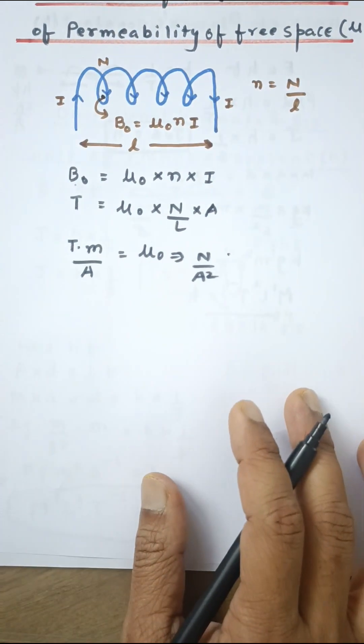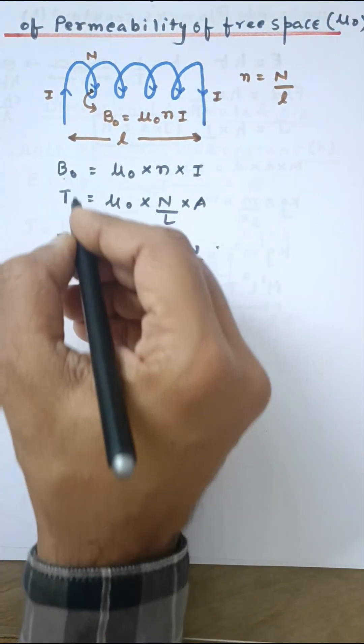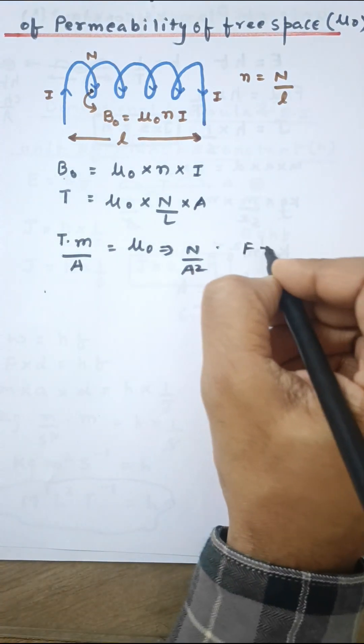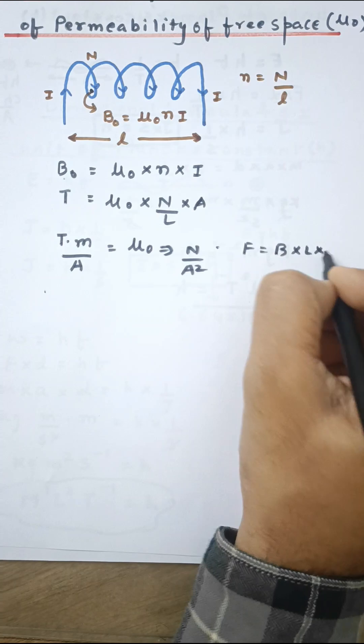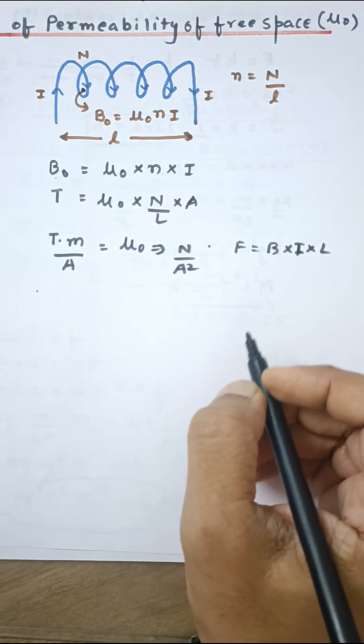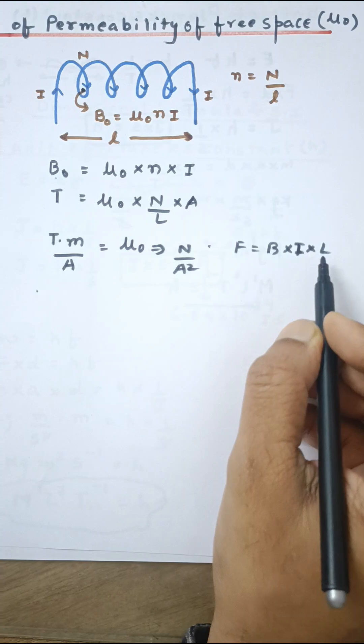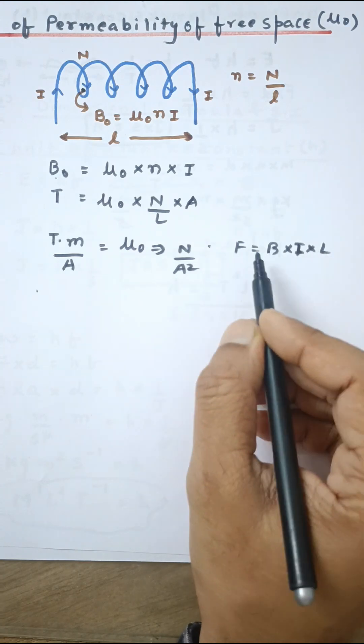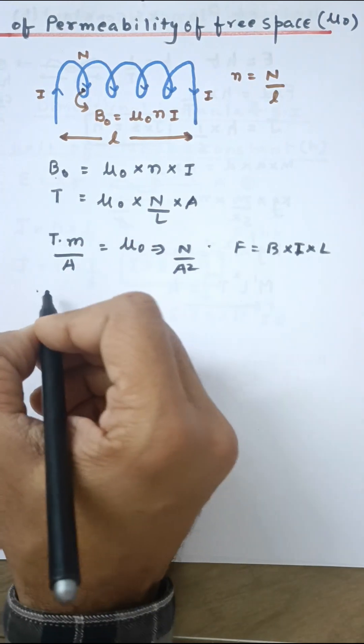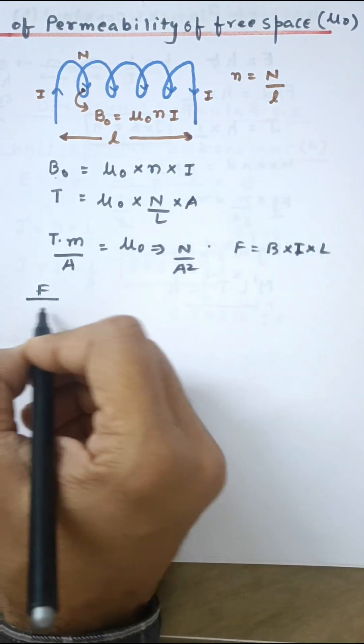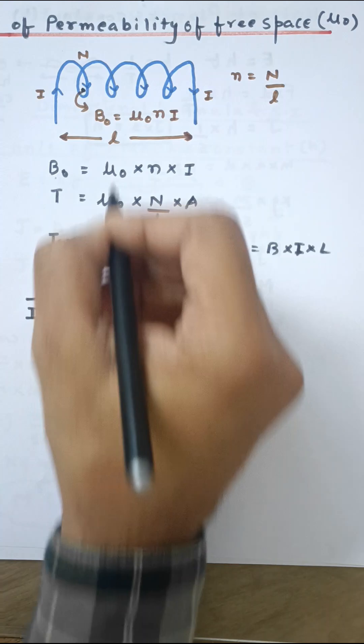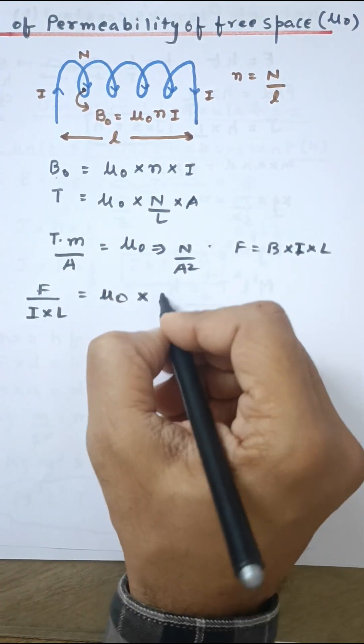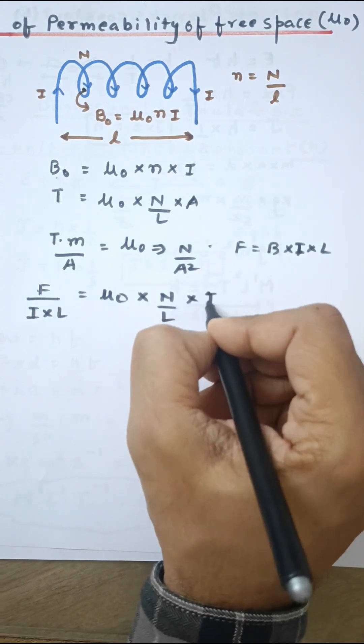Now let us write down the dimensional formula of μ0. I am going to write F equals B times I times L sin theta. We know this formula: when a current carrying wire is placed in a magnetic field, the length is L, current is I, in a magnetic field B, it experiences a force F. So I am simply going to use B as F upon I times L. That is equal to μ0. So instead of this B0, I have written μ0 times n by L times the current.